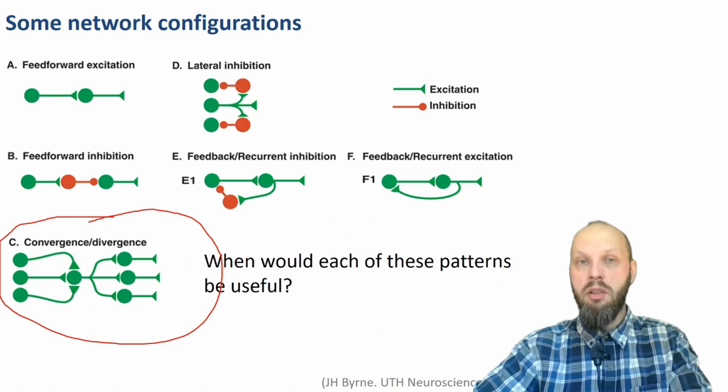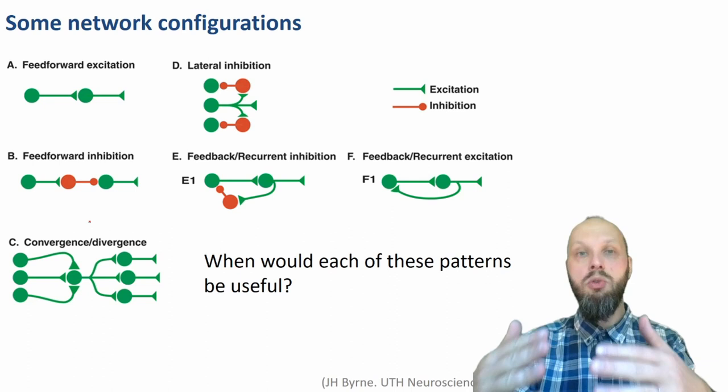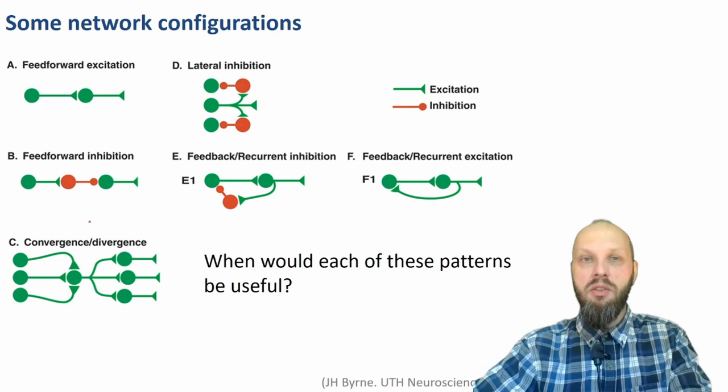The next pair of terms, convergence and divergence, are about several inputs converging on one neuron, or one neuron sending outputs to many neurons — two words whose meaning we could have guessed. Lateral inhibition is a fancy concept that we'll use a lot, but let's skip it for now, because it's a bit odd to learn it without the system in which it is used.